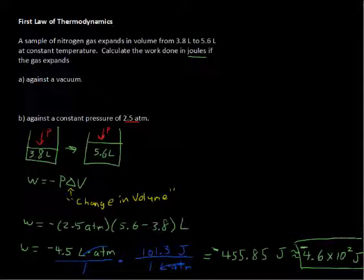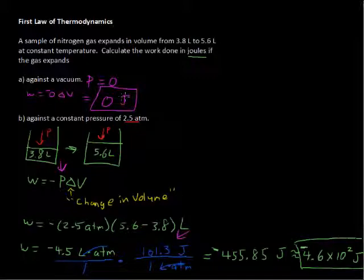Now, against a vacuum. Well, a vacuum means that the pressure equals zero. So in this formula right here, P would be zero. So work equals zero, negative or otherwise, zero times whatever the change in volume is. So that work is zero. Zero joules.